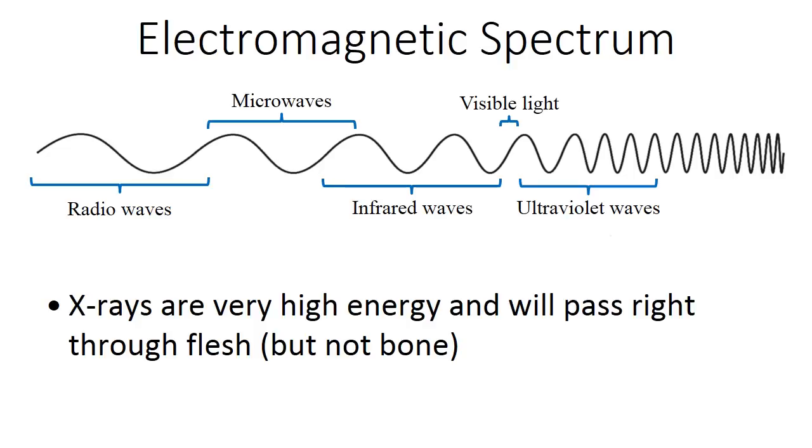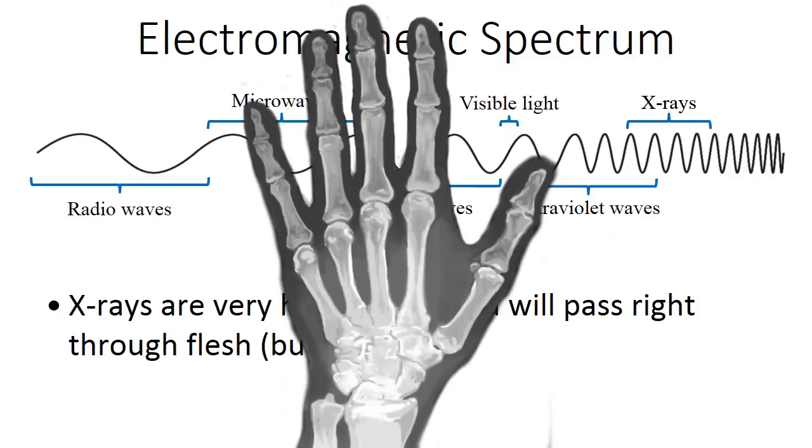Alright, after ultraviolet, we have x-rays. These are very high energy and will pass right through flesh, but not bone, which is what makes them helpful in medicine. Because we can take x-rays of things and we can see what the bones look like, but they'll pass right through the rest of your fleshy bits.